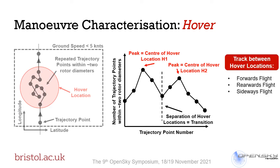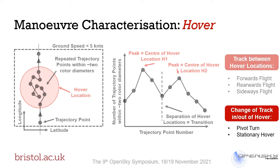A track between two hover locations could enable us to estimate whether the helicopter was performing forwards, rearwards, or sideways flight between them. For an isolated hover location, we could look at the change in track from the helicopter going into the hover to leaving the hover, to estimate whether a pivot turn had occurred — an on-spot turn — or whether the helicopter was just in a normal stationary hover.